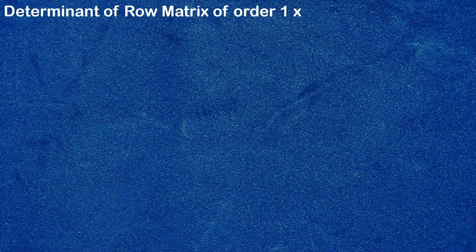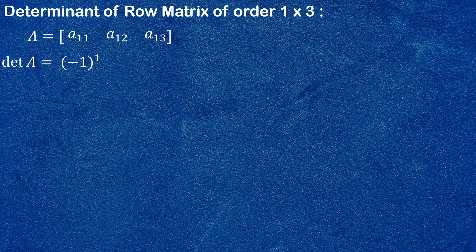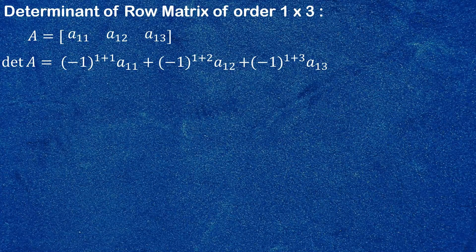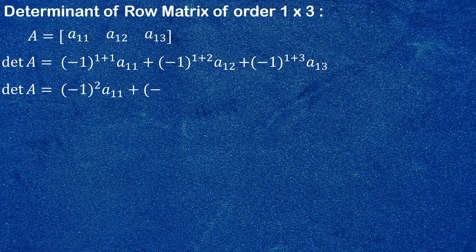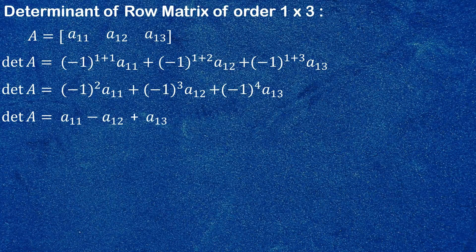Next, we find the determinant of a row matrix of order 1×3. Let's take a general 1×3 matrix of this form. Its determinant is defined as (−1)^(1+1) · a₁₁ + (−1)^(1+2) · a₁₂ + (−1)^(1+3) · a₁₃, which eventually becomes a₁₁ − a₁₂ + a₁₃.